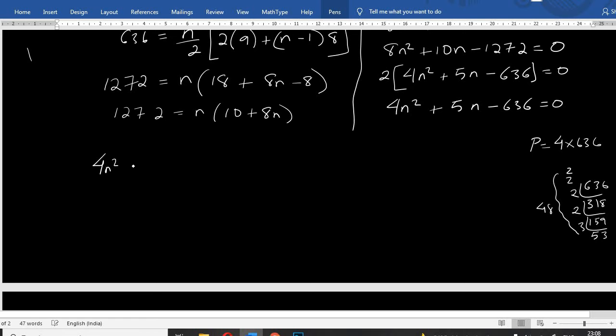So 4n squared equals 4n squared, this is minus 53n minus 48n minus 636. This is common: 4n plus 53 minus. This is common, divided 2 to the 4, 4 to the 12. 4n plus 53, n minus 12 equals 0.